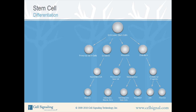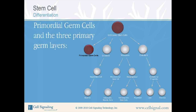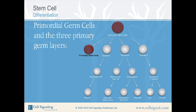Stem cell differentiation. Upon growth of the embryo, embryonic stem cells differentiate into primordial germ cells and the three primary germ layers: endoderm, mesoderm, and ectoderm. Each primary germ layer further differentiates along lineage-specific pathways to create every cell type in the body. The figure shown here provides a general overview of the primary lineage pathways. Let's take a closer look at the primary lineage pathways and the specific markers used to identify each one.